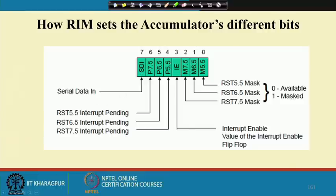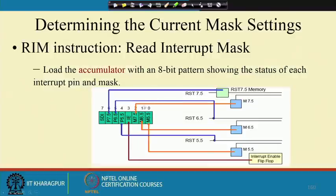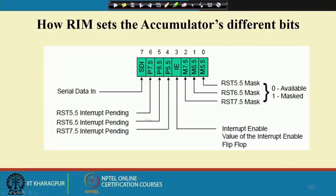If RST 5.5 is pending then p 5.5 is 1, if 6.5 is pending then p 6.5 is 1, if 7.5 is pending p 7.5 is 1 — where 7.5 is at bit 6, 6.5 at bit 5, 5.5 at bit 4. The IE bit stores whether the interrupt enable flip-flop is set, and the mask bits store the current mask values.